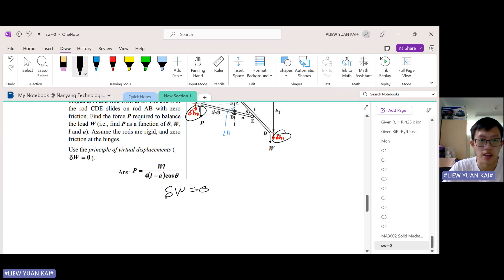So the work done we have P dh2, which is positive because they're both in the same direction, and then W dh1, also positive because they're in the same direction.